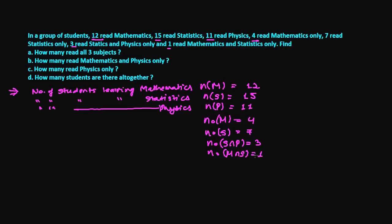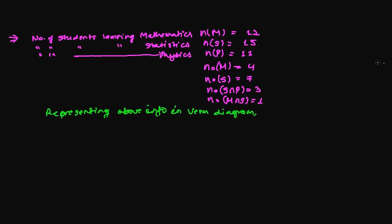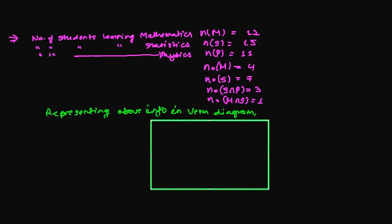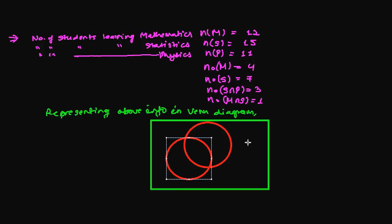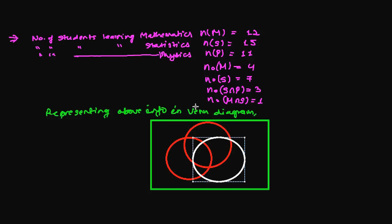Now for the second step, we represent this information in the Venn diagram. We draw a rectangle and three overlapping circles — one for mathematics, one for physics, and one for statistics. We need to fill in all sections one by one. We start from the known values. The middle section — the intersection of all three — we don't know yet.